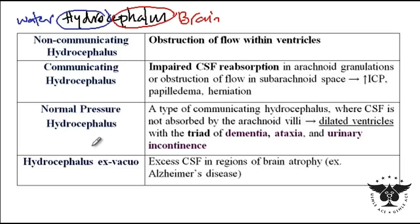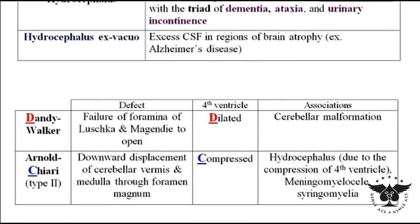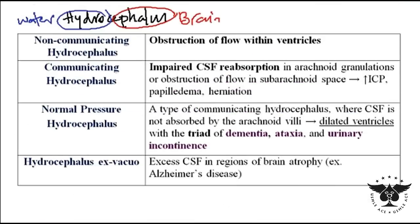There are different forms of hydrocephalus, and there are also other conditions like Dandy-Walker and Arnold-Chiari syndrome which are associated with dilation or compression of the fourth ventricle. First, I would like to describe the normal physiology of cerebrospinal fluid production and then discuss the anatomy of the cerebral ventricles, after which it will become very easy to understand the mechanism of pathogenesis of these disorders.